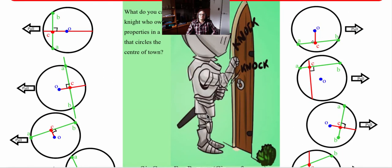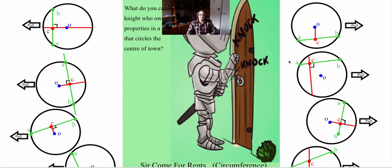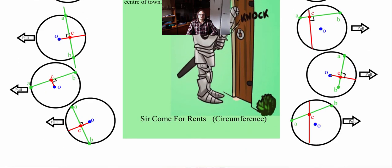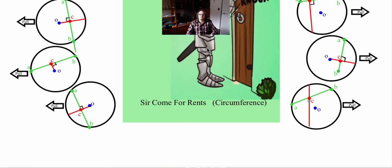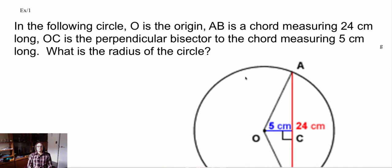Looking at the counterexamples at the top: in one case the line is not perpendicular to the chord, so it does not bisect it. In another, the red line doesn't go through the center. In another, the red line goes through the center but AB is not a chord. And in the last, the line doesn't go through the center, so we can't be sure it bisects that chord. Let's now apply this new rule to our first example.